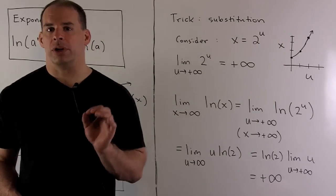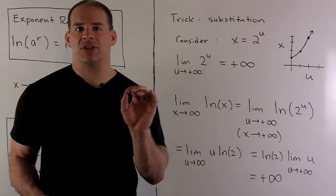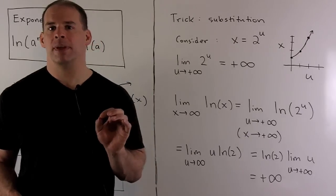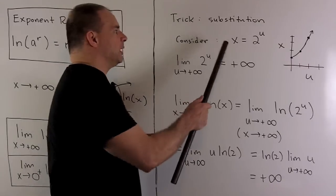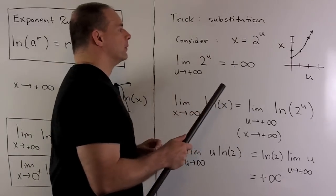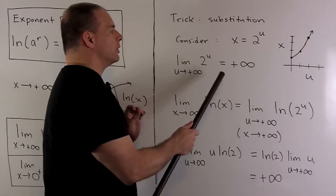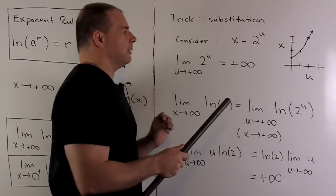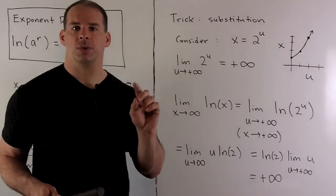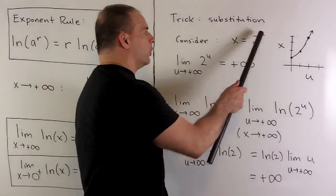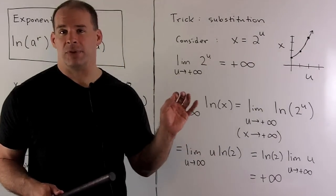To get our limits, the trick we're going to use is substitution. In natural log of x, I want to replace x with another function that's easier to work with. For our first limit, I'm going to let x be equal to two to the u. If I let u go off to infinity, two to the u is going to go to plus infinity — just pick values u = 0, 1, 2, 3, 4 and you get 1, 2, 4, 8, 16. That thing's definitely going to grow without bound.